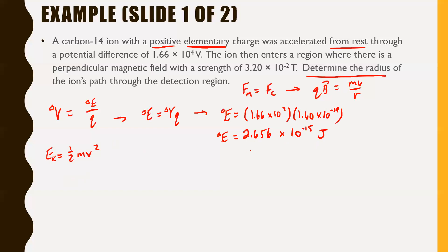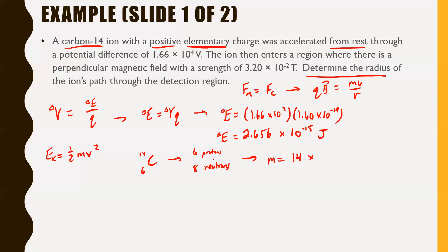Now we need the mass to find velocity from EK equals ½mv². We know it's a carbon-14 ion. Carbon-14 has an atomic number of 6, meaning 6 protons and 14 minus 6 equals 8 neutrons — 14 nucleons in total. In Physics 30, protons and neutrons have the same mass: 1.67 × 10⁻²⁷ kilograms. So the mass is 14 times 1.67 × 10⁻²⁷, giving a mass of 2.338 × 10⁻²⁶ kilograms.